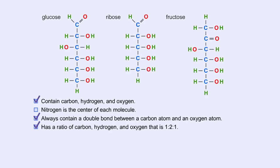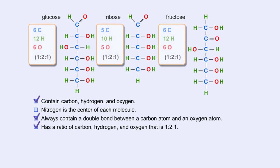Carbohydrates have carbon, hydrogen, and oxygen in a ratio of 1 to 2 to 1, and there is always a double bond between a carbon atom and an oxygen atom. Carbon forms the backbone of the molecule. These are the basic characteristics of all carbohydrates.